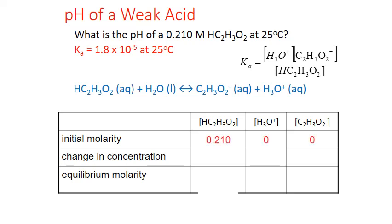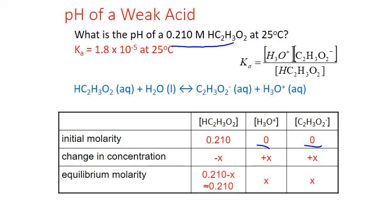We fill in initial concentrations from the problem: the acid concentration is 0.210 mol/L, and we assume initial hydronium ion and acetate anion concentrations are both 0 — the small amount of hydronium from water is negligible compared to what the acid produces. As the acid ionizes, all coefficients are 1-to-1, so concentrations change by −x for the acid and +x for each product. Combining initial and change rows gives equilibrium concentrations of x for each product and 0.210 − x for the acid.